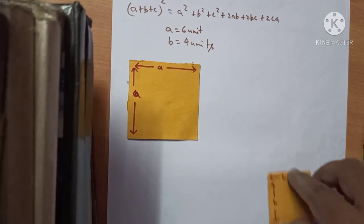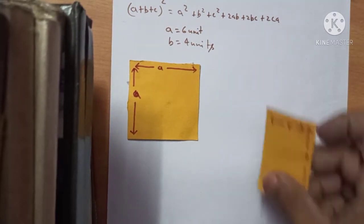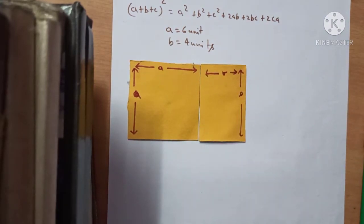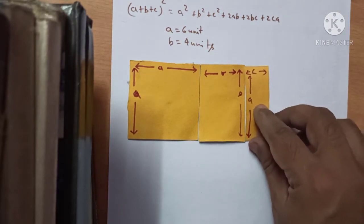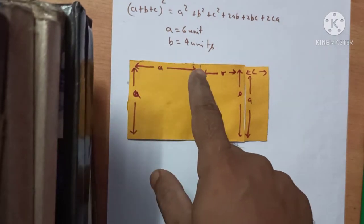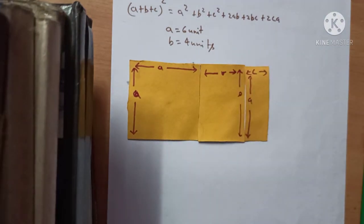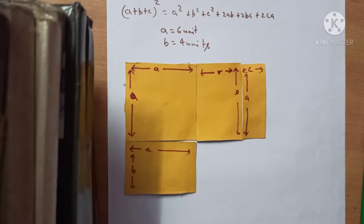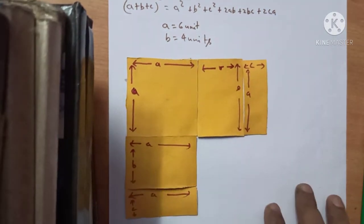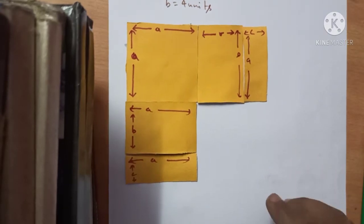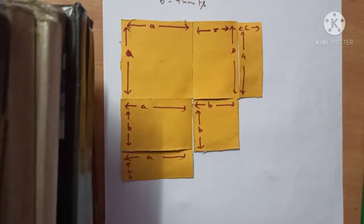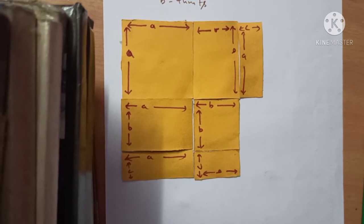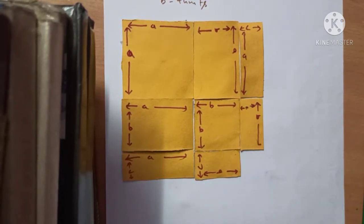Let's take it out. I have placed the a square here. Then I have taken an ab piece and placed it next to it, and one ac piece. Now the length becomes a plus b plus c. Here again I am placing b, then this is a, this is b, and now I am arranging c. So this gives a plus b plus c again. Now I am putting the b square over here, then placing the bc piece, and one more bc piece like this.